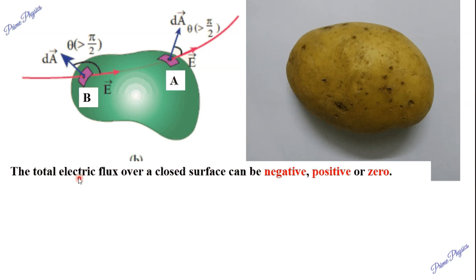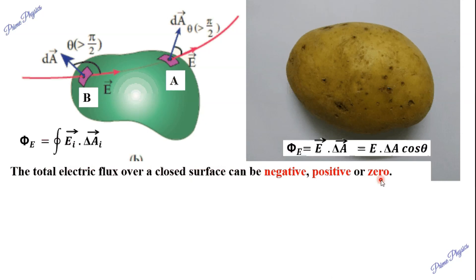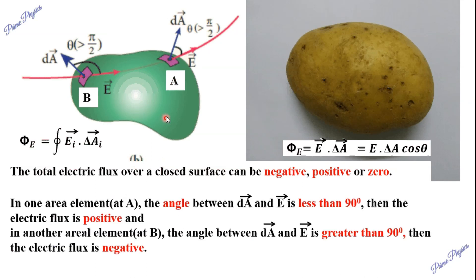Now, the flux value can be negative, positive, or zero. Our general flux formula is φ = E · dA · cosθ. At point A, consider the E vector direction and the area vector dA vector. If the angle θ is less than 90°, then cosθ is positive, so the flux is positive. This happens when the electric field lines are going out of the surface.